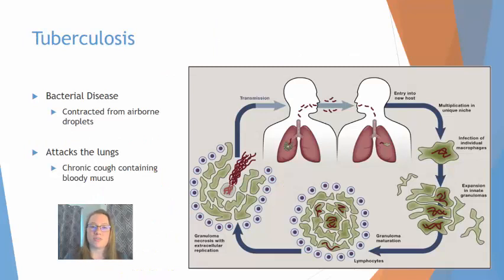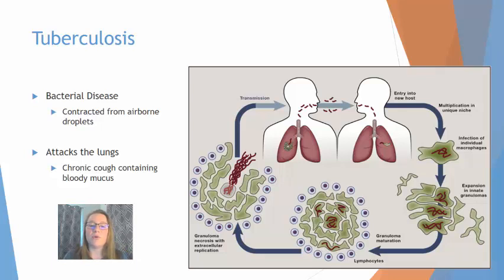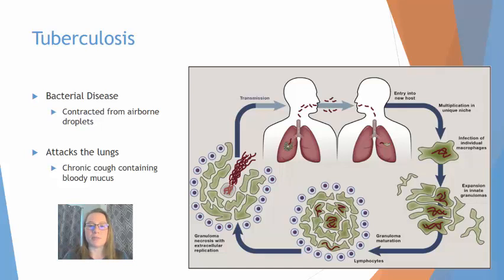Tuberculosis is also a bacterial disease, contracted through airborne droplets or airborne transmission. Tuberculosis attacks the lungs and causes lesions — damage to the lung tissue. Typical symptoms include a chronic cough, and as you cough you are also coughing up mucus containing blood because the lungs are so severely damaged.